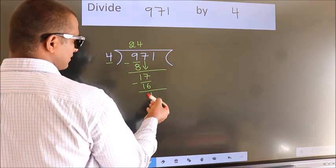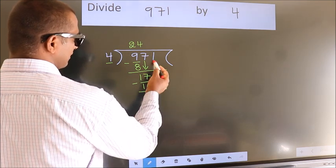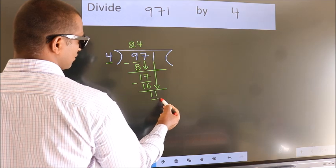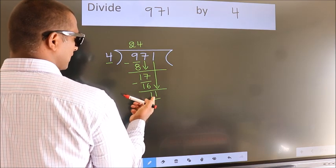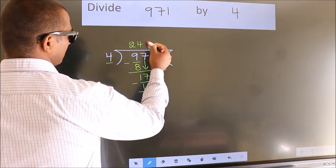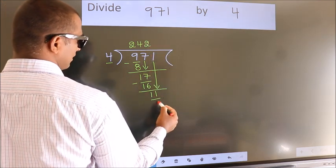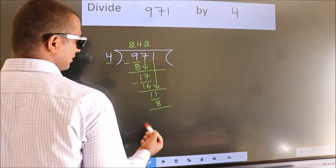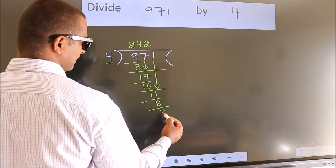After this, bring down the beside number. So, 1 down. So, 11. A number close to 11 in 4 table is 4 twos, 8. Now, we subtract. We get 3.